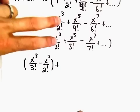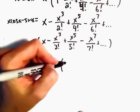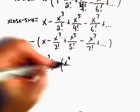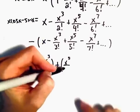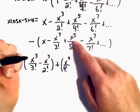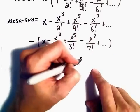We've got x to the fifth terms. It looks like we would have a positive x to the fifth over 4 factorial minus x to the fifth over 5 factorial.